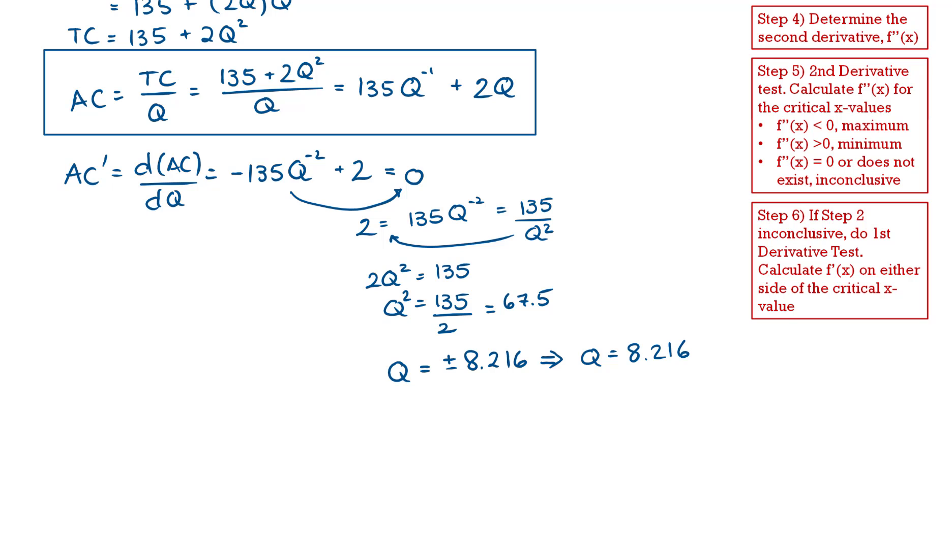Now the next question you might pose is how can you have 8.2 quantity? Well, the reality is we don't know what the units of Q are. Q could be in thousands of units, in which case 8.216 times 1,000 would give us 8,216 items.